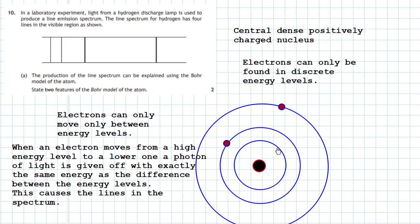This energy level here would be called the ground state, and subsequently different energy levels higher up will be given higher and higher energies.